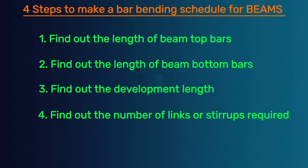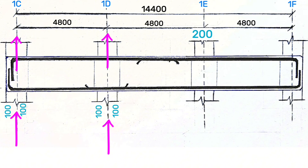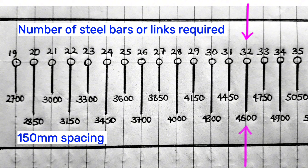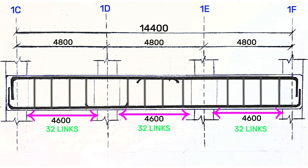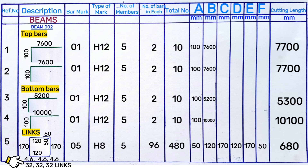Step four is to find out the number of links or stirrups required for the beam. The whole distance between gridlines is 4.8 meters. Since columns are 200mm wide, deduct 100mm on each side — leaving 4.6 meters of clear span where links can be fixed. For every distance of 4.6 meters, we need 32 links or beam stirrups. This applies for all spans of 4.6 meters. Links with 32 links are required for each such distance.